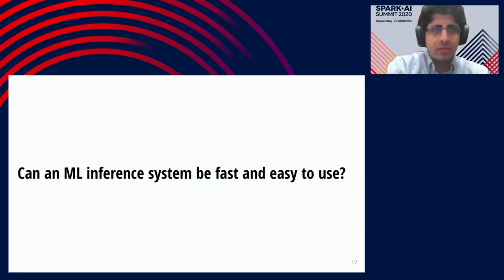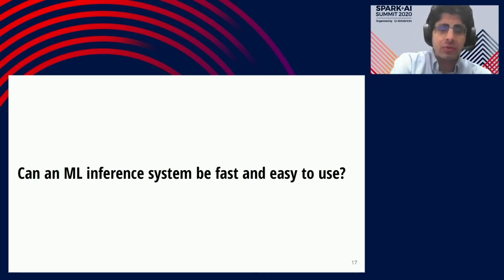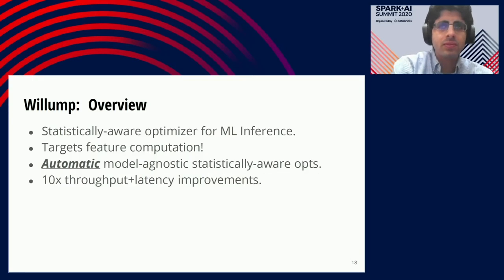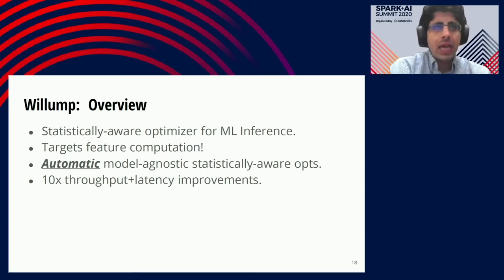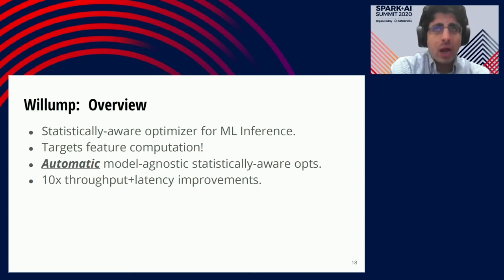So that begs the question: can we build an ML inference system that's both fast and easy to use? We think the answer is yes, and that's why we developed Willump, a statistically aware optimizer for machine learning inference. Willump optimizes ML inference applications whose performance bottleneck is feature computation. It uses automatic, model-agnostic, statistically aware optimizations to dramatically improve the performance of real-world ML inference workloads.